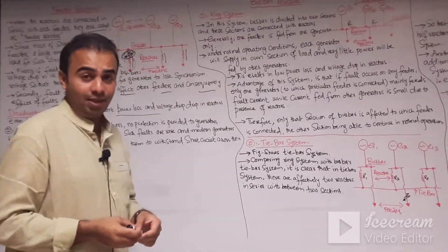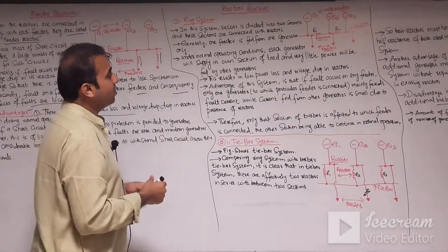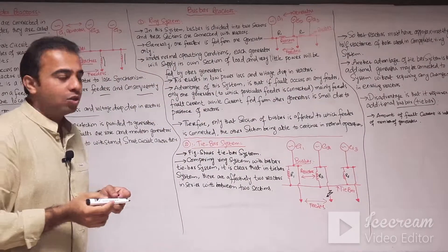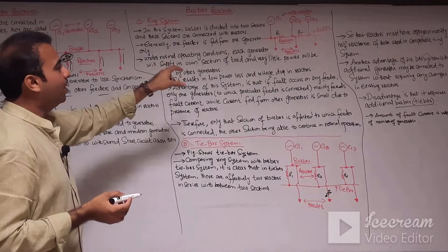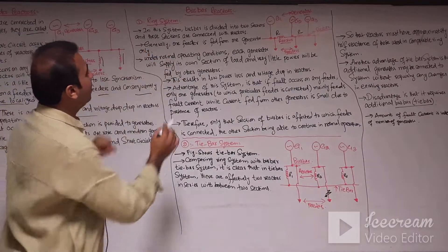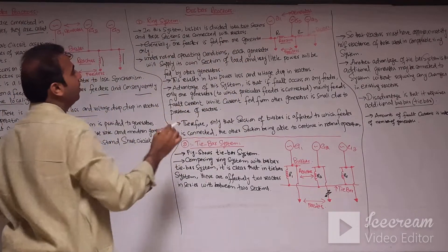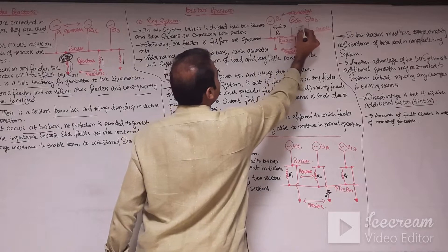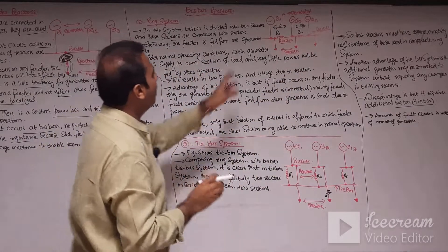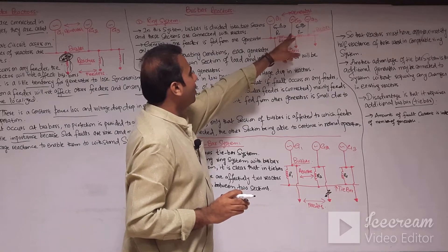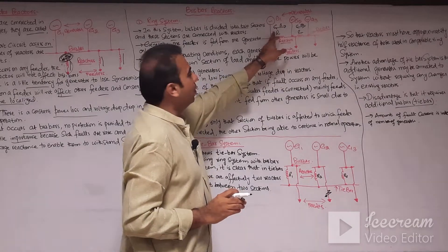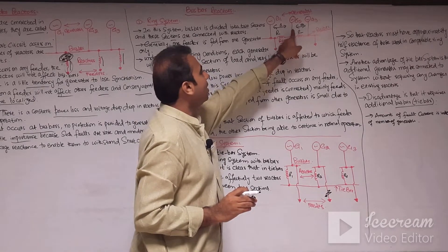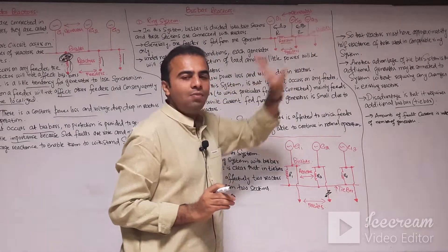Now let us discuss the bus bar reactors. Bus bar reactors are reactors connected in series with the bus bar. This is like a ring system of the bus bar where the bus bar is divided into two sections connected with a reactor. For example, section 1 is connected — a reactor is connected in series with G1, and for section 2, a reactor is connected in series with G2 and G3.